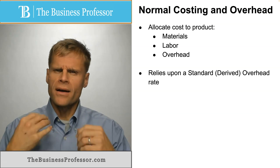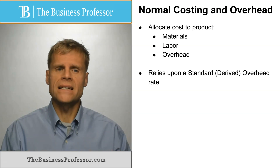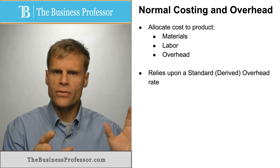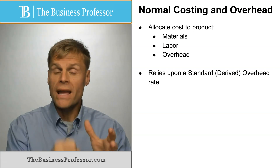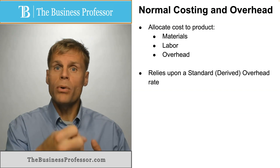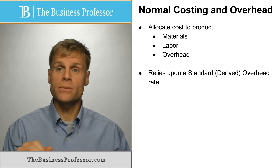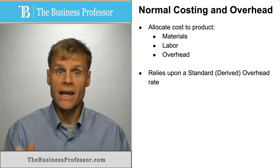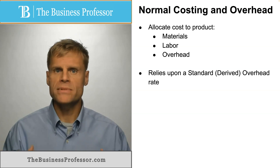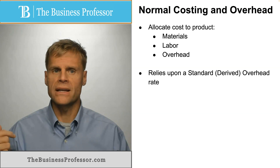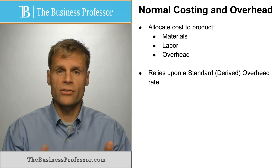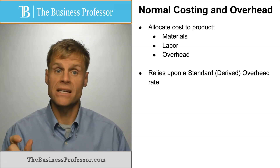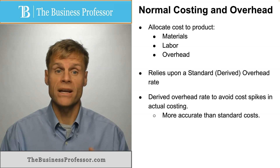What normal costing does is have the accountant or the organization come up with a standard or derived overhead rate. That is the total overhead — you come up with a rate for how you would allocate some portion of the total overhead based upon the driver of an overhead cost and its relation to the output of the product. So for every hour of labor invested into making the product, you would allocate some percentage of the overhead based upon that derived overhead rate.